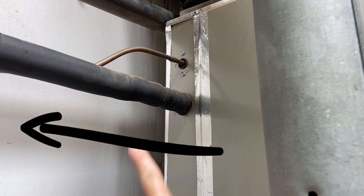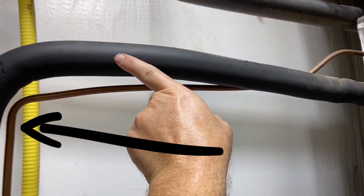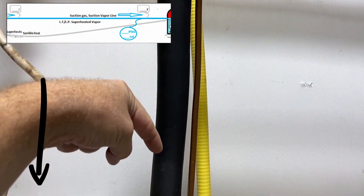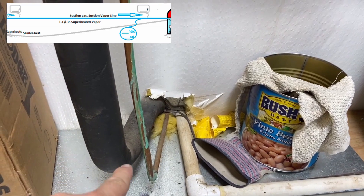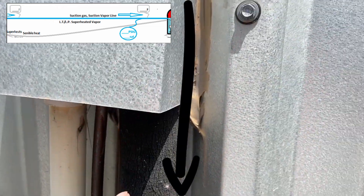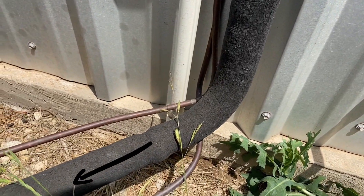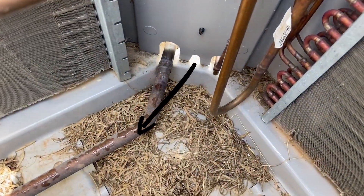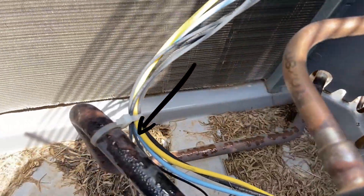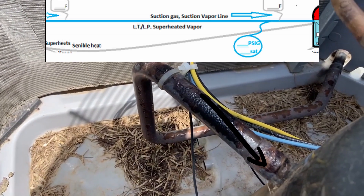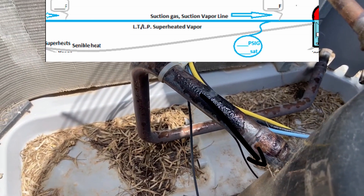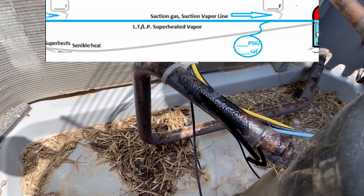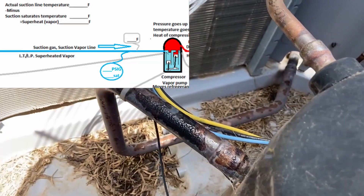Here we have our suction line, also called our gas line — it's a low temperature, low pressure superheated vapor. This line is insulated because we do not want to absorb any more heat. We follow the suction line all the way outside, continuing back towards the outdoor unit. The suction line goes through a valve and we can see the fat line coming in along the bottom, going right back to the compressor. We want to make sure our superheat is above five degrees to protect the compressor from any liquid refrigerant.